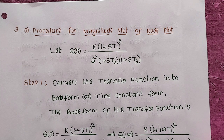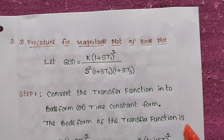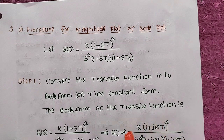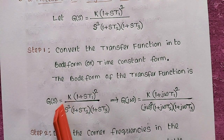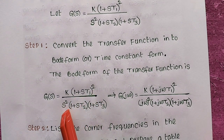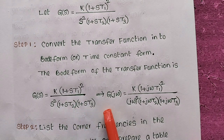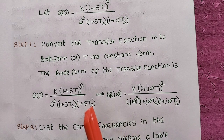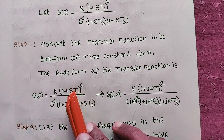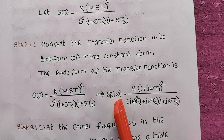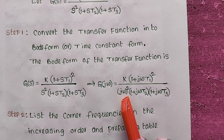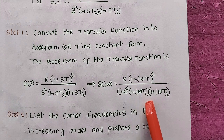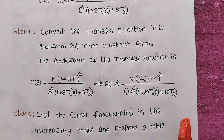We have to convert the given transfer function into Bode form, otherwise called time constant form. This transfer function is already in time constant form: G(s) = k(1 + sT1)² / [s²(1 + sT2)(1 + sT3)]. We replace s with jω because Bode plots are frequency domain analysis, giving G(jω) = k(1 + jωT1)² / [(jω)²(1 + jωT2)(1 + jωT3)].